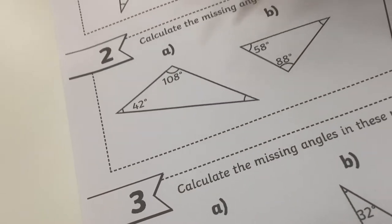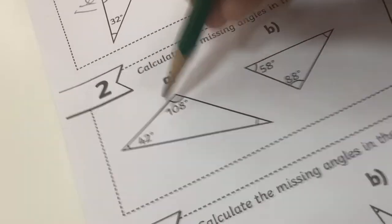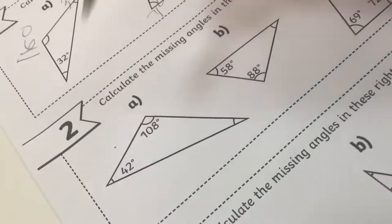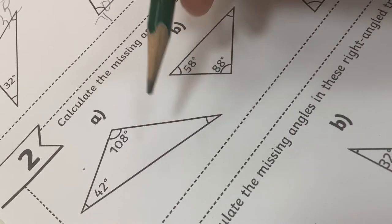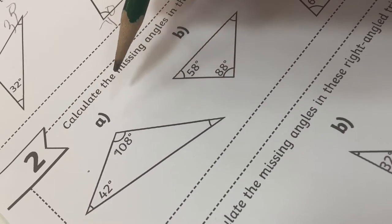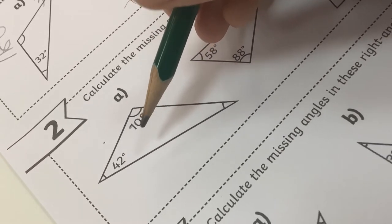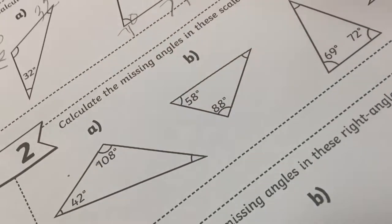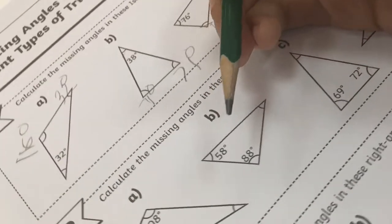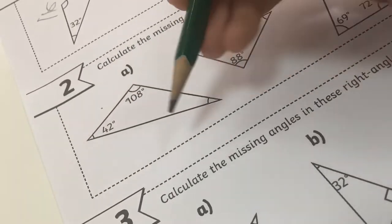Now the second part looks like this: 108, 62, 150. Wait, something is off here. I think this angle must be, oh here, it must be 30 degrees.